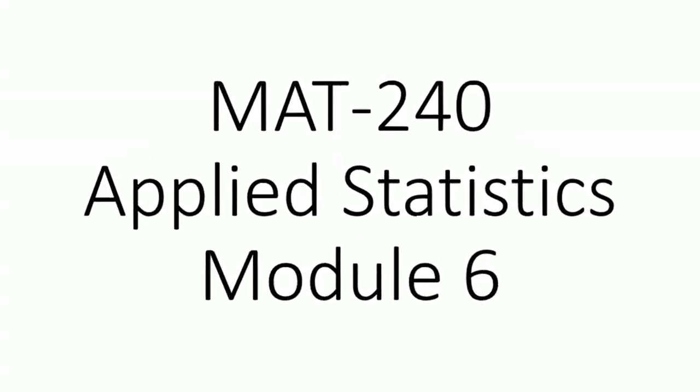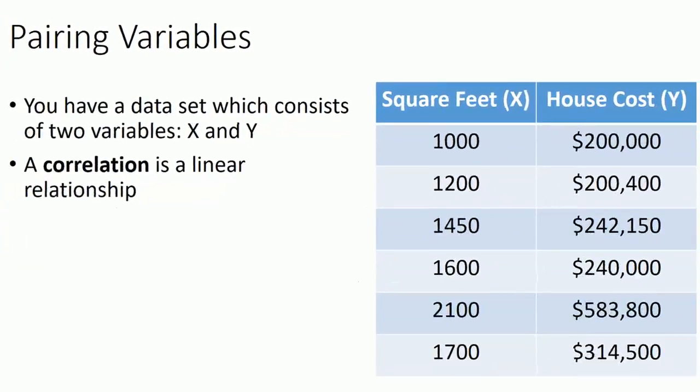Welcome to Math 240, Applied Statistics. We're talking about regression, correlation, module 6 topics. So far in this course we've only looked at a single set of variables, or in the case of paired sampling, the same characteristic measured in both populations. Now let's say we have one population and we're measuring two different characteristics from that population in our sample.